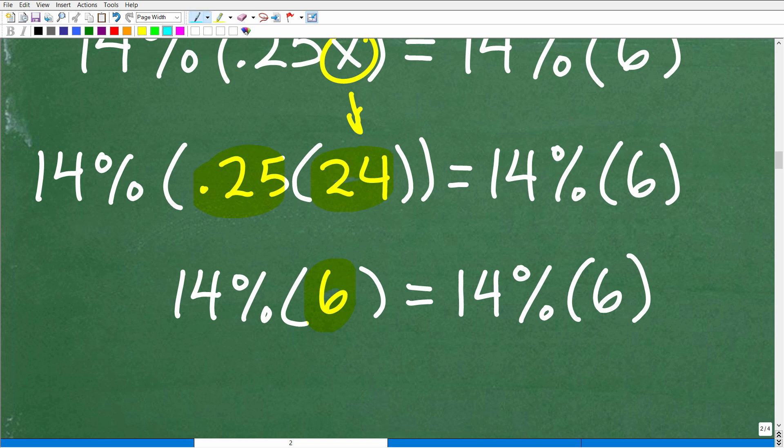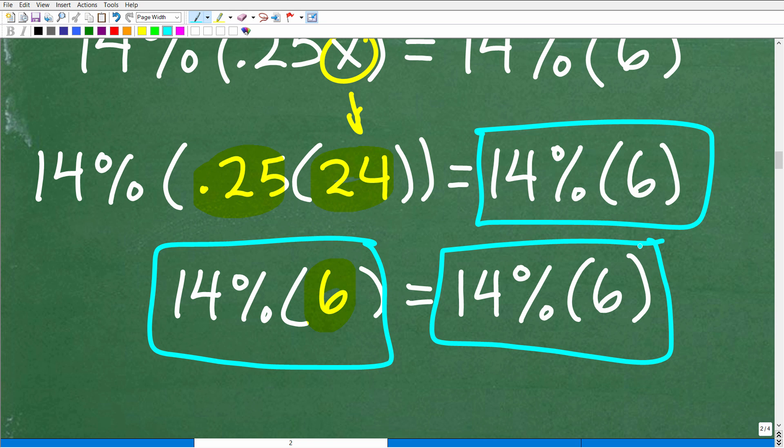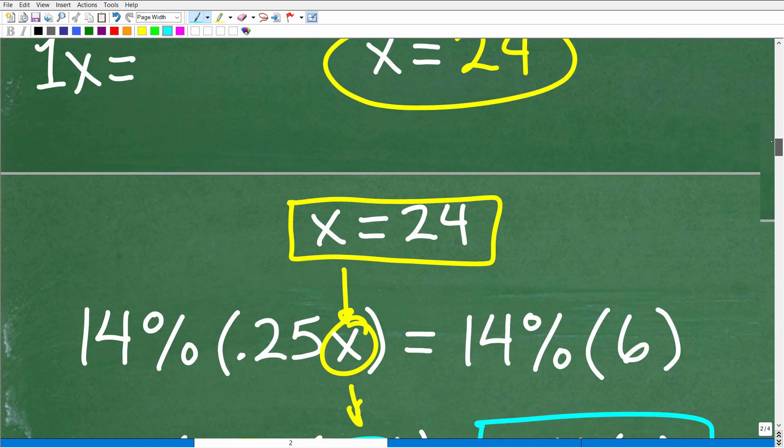You're left with 14% of, of course, 0.25 times 24 is 6, is equal to what's over here, 14% of 6. You don't even need to do the math because you can see these are the exact same values. 14% of 6, is 14% of 6 equal to 14% of 6? Yes, indeed, they are the same thing. So, this number value that creates this situation is a valid solution.